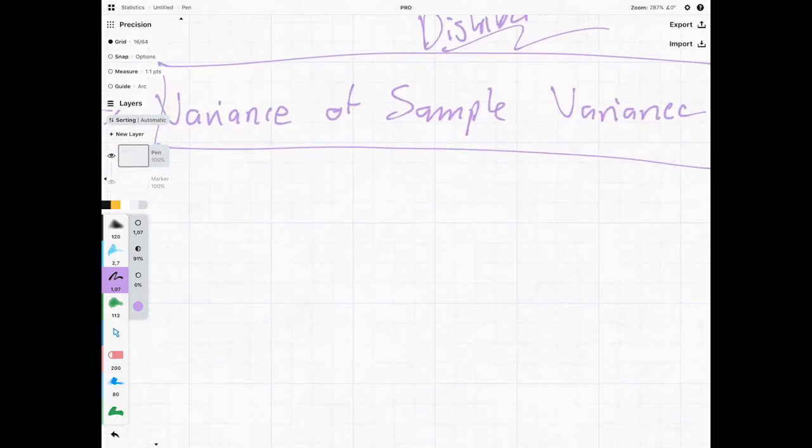So a quick little recap. We saw that s squared is a random variable which means it has its own distribution and we saw that the expected value of s squared is equal to sigma squared when we use something known as the Bessel coefficient of 1 divided by n minus 1. So we're using that so that the expected value of our sample variance is equal to that of our population variance.